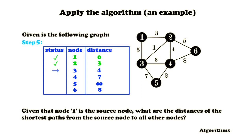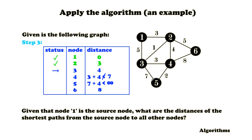For node 3, we check all its outgoing edges. We don't need to check nodes 1 and 2 since they've already been visited, so we check the edges going to nodes 4 and 5. For the edge going to node 4, we sum its weight with the known distance of node 3 which is 4, giving a sum of 7. Since 7 is not smaller than 7 — they're equal — we don't update it. For the edge going to node 5, the sum is 7 plus 4 which is smaller than infinity, so we update that. Then we're done with node 3.